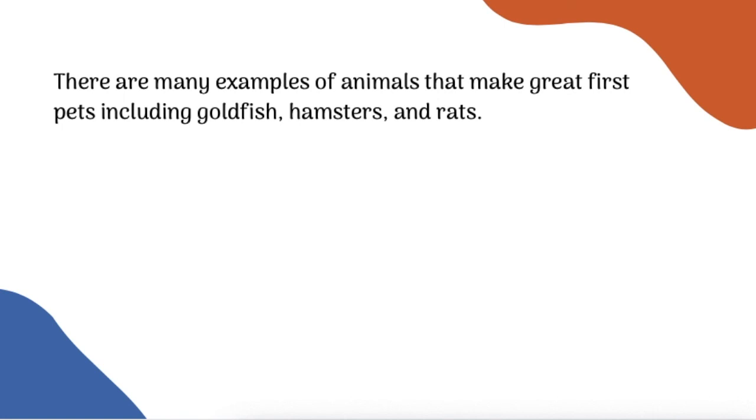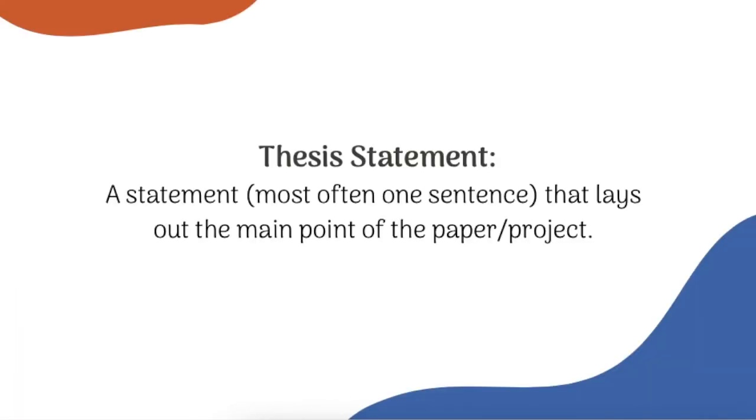Take a look at this thesis statement. I'm writing a paper about first pets, and I want to inform my reader about some good options for a first pet. My thesis statement helps me know that I need at least one paragraph for each of my examples, and I'll put them in the same order in my paper that they appear here in the thesis statement: goldfish first, then hamsters, and then rats.